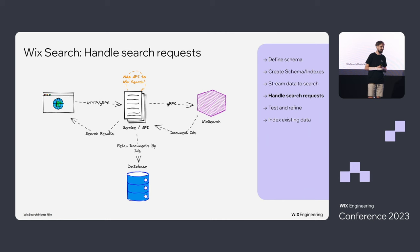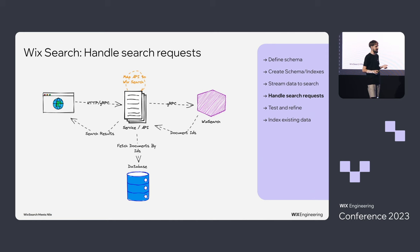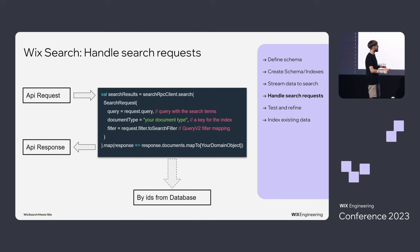For the read flow — handling search requests — you convert your API call to a Wix Search call, make the call, get back the document IDs or documents themselves, fetch them from the database, do the mappings, and return the result to your user. The code for the filter mapping and domain mapping can sometimes be more complex, but it basically boils down to that.